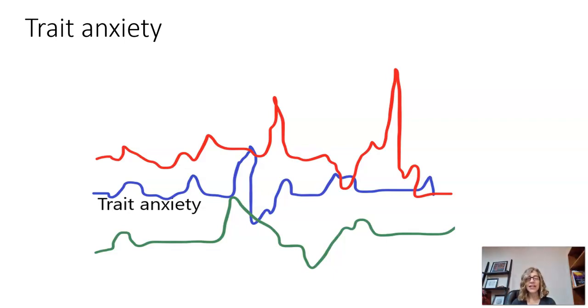Trait anxiety is a way to think about temperament, actually. And when we talk about temperament, it's thought to be something that we're born with. It's ingrained in us. It's not something that we choose.